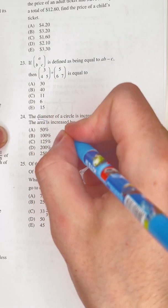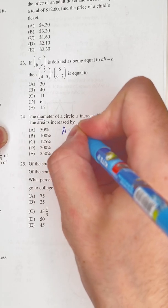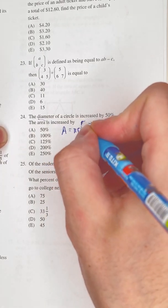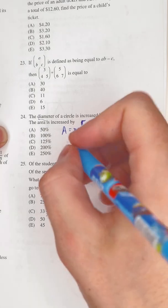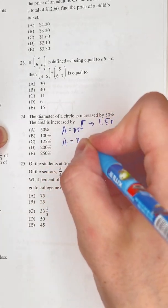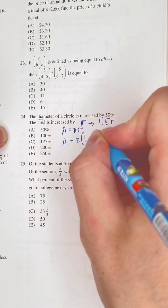And the initial area of a circle is A equals πr². But instead of the regular r, we have to use 1.5r. So the area really is π(1.5r)².